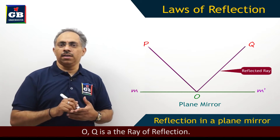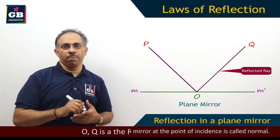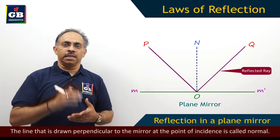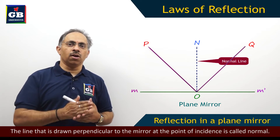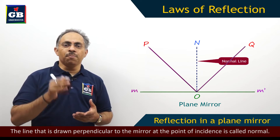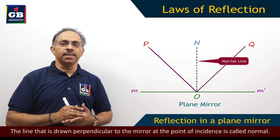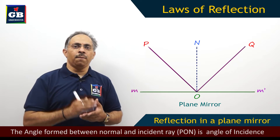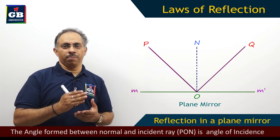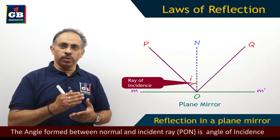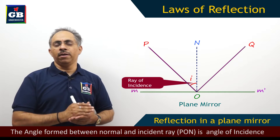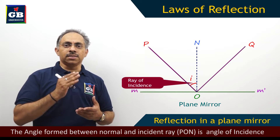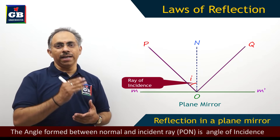Now if we draw a line ON which is perpendicular to the mirror MM', then that particular line drawn perpendicular to the mirror at the point of incidence, we will call it as the normal. Now there is an angle formed between PO and ON — PO is the incident ray, ON is the normal at the point of incidence — so the angle between PO and ON is called the angle of incidence, which is generally denoted by i.